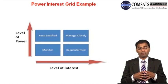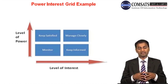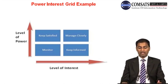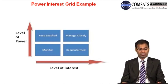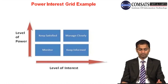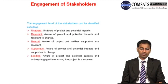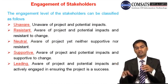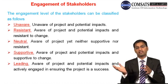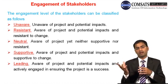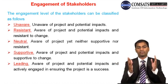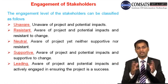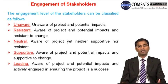One example is the power-interest grid. On the y-axis is level of power, and on the x-axis is level of interest. If a stakeholder's level of interest is high and their level of power is high, you need to manage them very closely. If they have lesser interest and lesser power, you can simply monitor them.